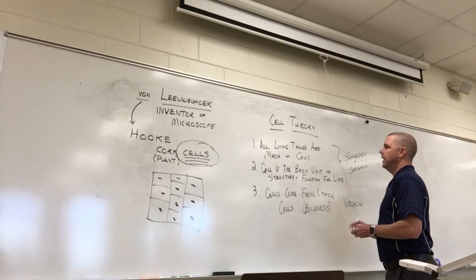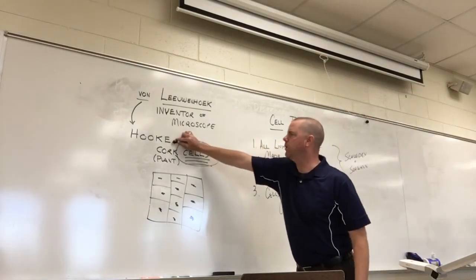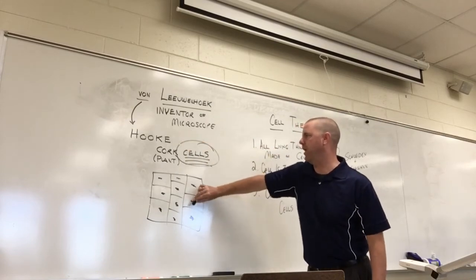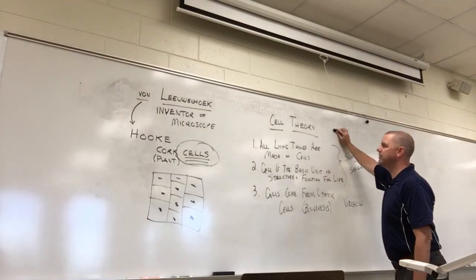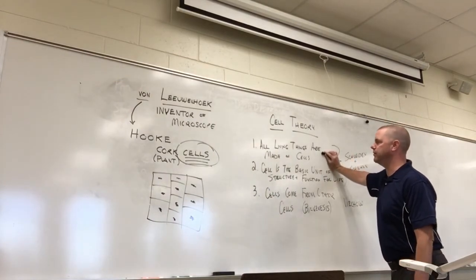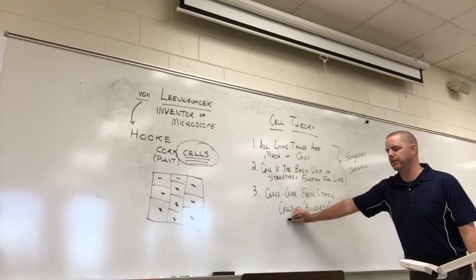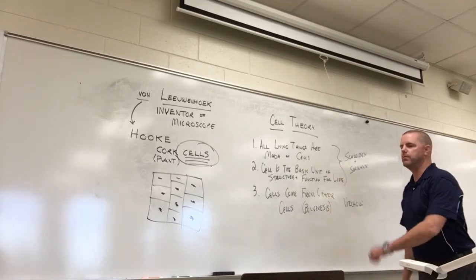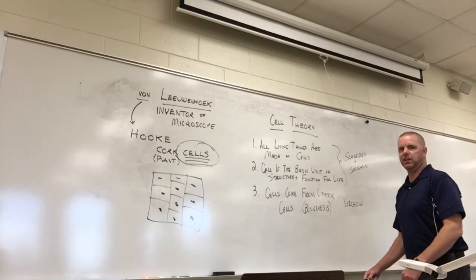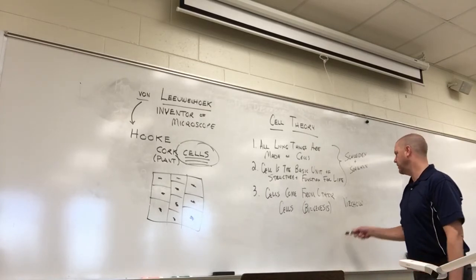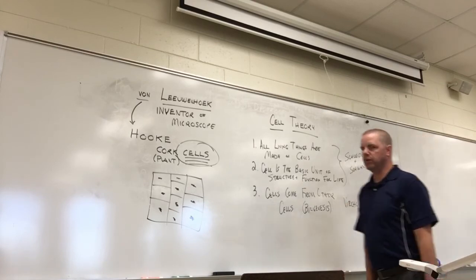Biogenesis was established by a person named Rudolf Virchow. So to recap: von Leeuwenhoek invented the microscope; Hooke, by looking at plant cork, called them cells. Then we have cell theory: all living things are made of cells; the cell is the basic unit of structure and function of living things; and cells come from other cells - they don't just arise from nowhere. Life begets life. The first two are Schleiden and Schwann, and the last one is Virchow.